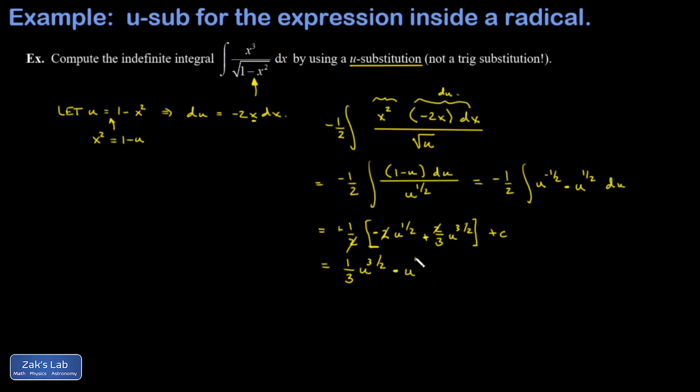And finally we'll sub in the definition of u, and I get one third one minus x squared to the three halves minus the square root of one minus x squared plus c, and we're done.